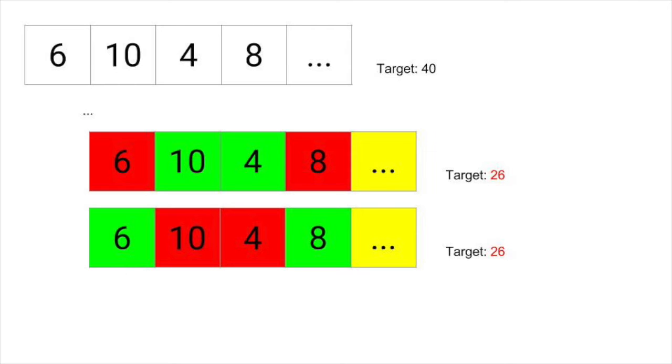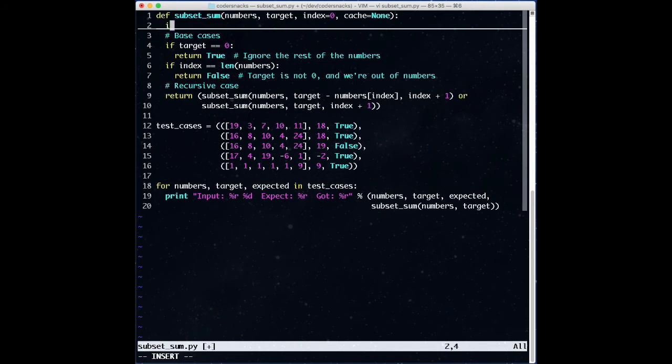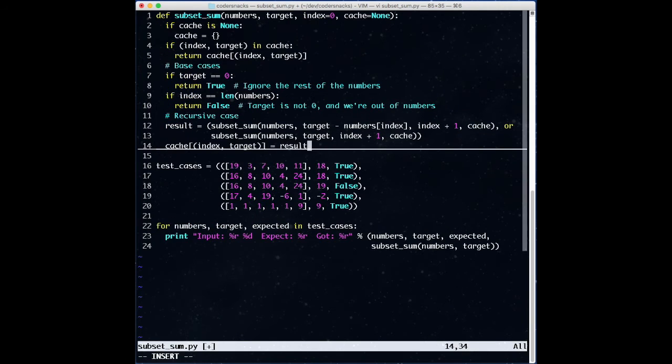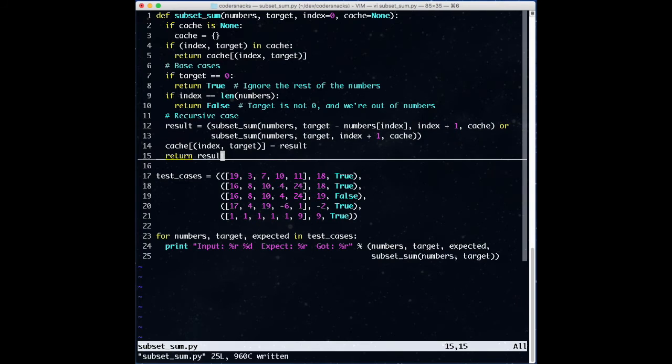Implementing the cache is straightforward. At the top, we check if we have the answer cached already, and at each return site, we cache the value we're about to return. We see the code still works.